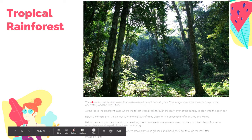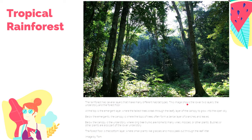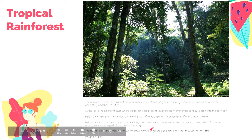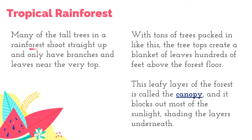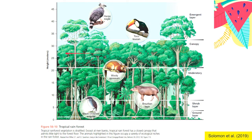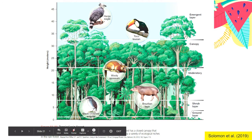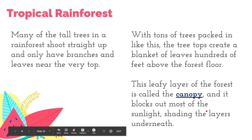The rainforest has several layers which make different habitat types, including understory and the forest floor. The canopy is the tree tops — a dense layer of branches and leaves. Many of the tall trees in a rainforest shoot straight up and only have branches and leaves near the very top. With tons of trees packed together, the tree tops create a blanket of leaves hundreds of feet above the forest floor. We call that the canopy, and it blocks most of the sunlight, shading the layers underneath.